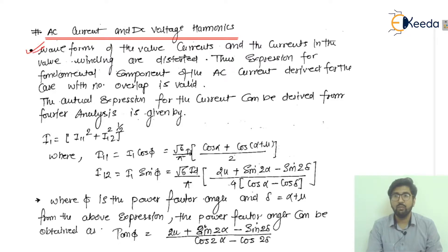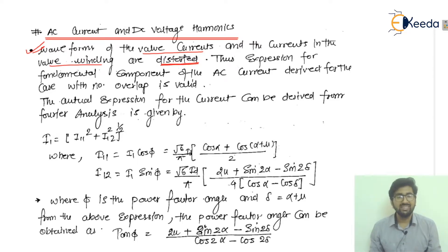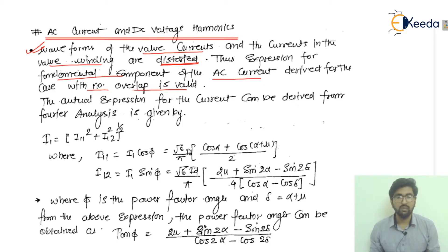The waveforms for the valve currents and the currents in the valve winding are distorted. When 'valve' is mentioned here, it refers to the thyristor. The current flowing in the thyristor and the current flowing in the valve winding are both distorted. The expression for the fundamental component of the AC current, derived for the case with no overlap, is valid when there is no overlapping angle.